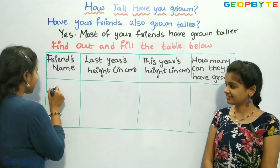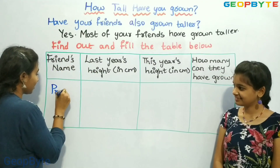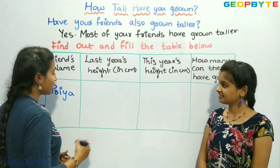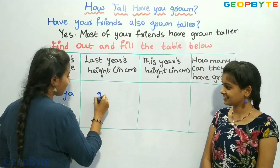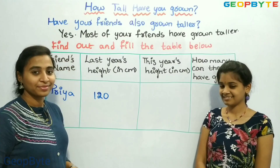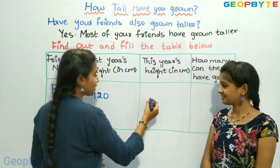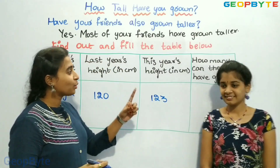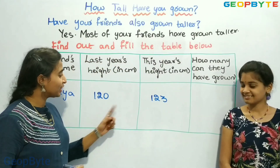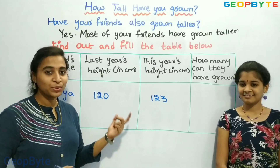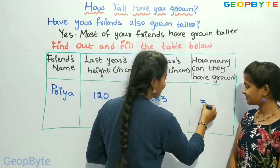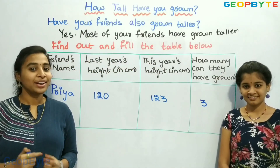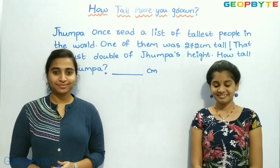For example, my friend's name is Priya. Her last year's height in centimetres is 120. Now, this year she is 123 centimetres tall. The difference between these two heights is 3 centimetres. Like this, you need to write your friends' heights in the table.